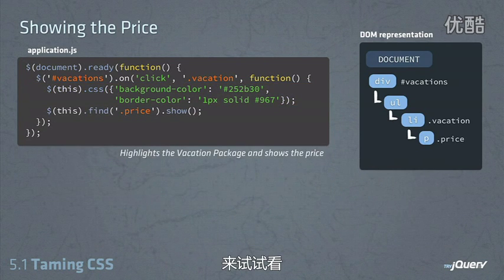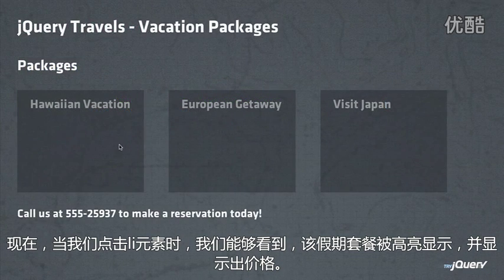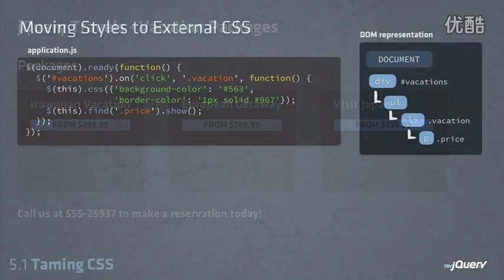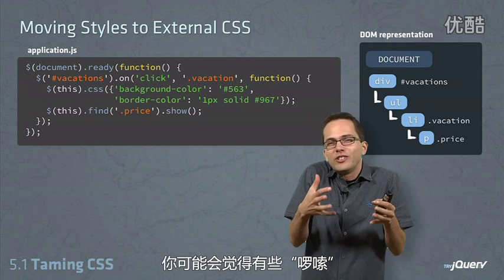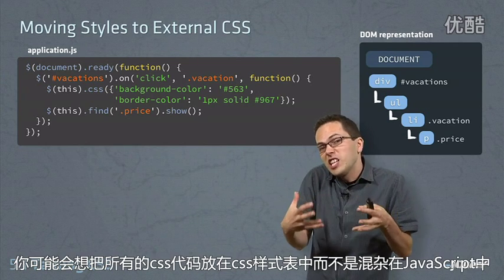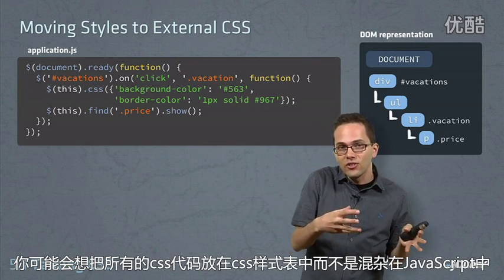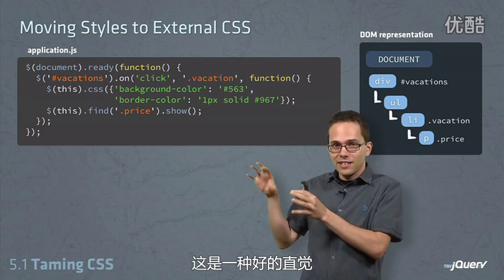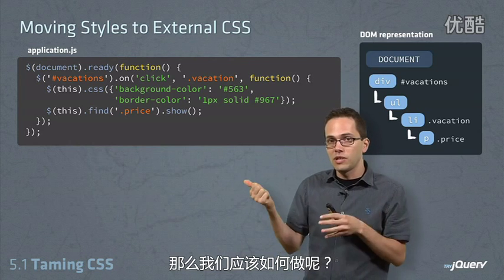And there we go. Now when we click on the li, it highlights the vacation package and shows the price. This might feel a little bit dirty to you — and that might be a good feeling — because you might want to keep all of your styles inside of your stylesheet and not in your JavaScript. So how might we do that here?